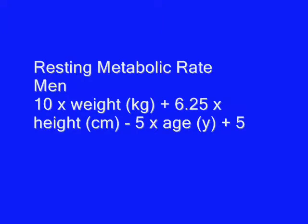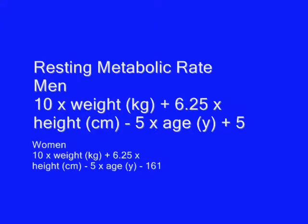Now that we have our weight in kilograms and height in centimeters, we're ready to plug this into the equation. For men, the formula is: 10 times weight in kilograms, plus 6.25 times height in centimeters, minus 5 times age in years, plus 5. The only difference for women is the ending — instead of plus 5, women subtract 161.